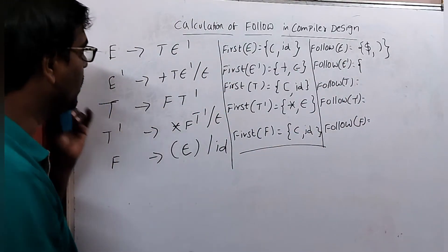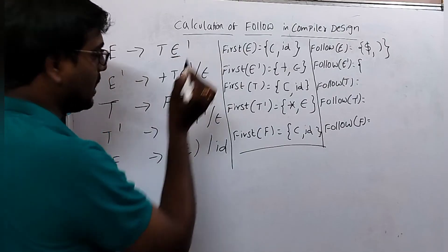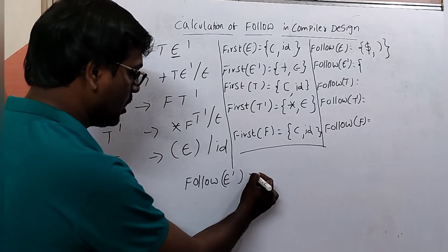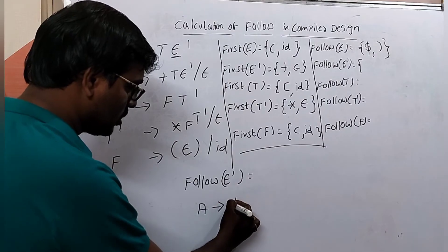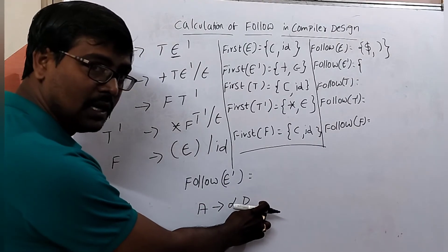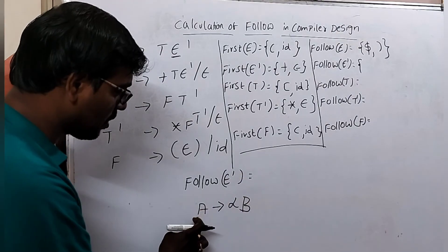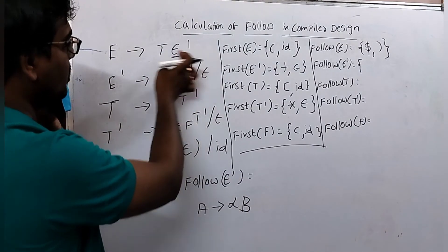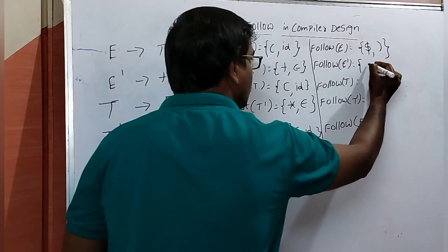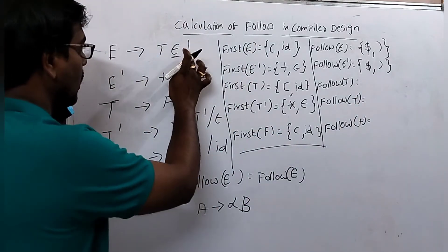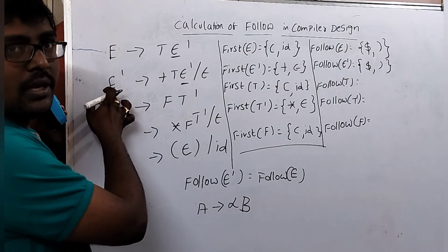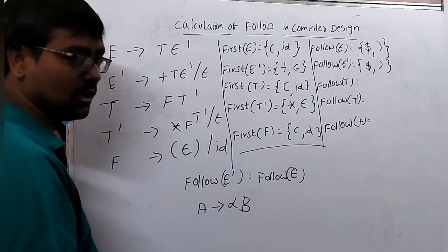FOLLOW of E': E' appears in E → TE'. After E' no symbol is present, so this is of the form A → αB, meaning FOLLOW of E' equals FOLLOW of E, which is {$, )}. E' also appears in E' → +TE', but that production's left-hand side is also E', so no new information is added. Therefore FOLLOW(E') = {$, )}.